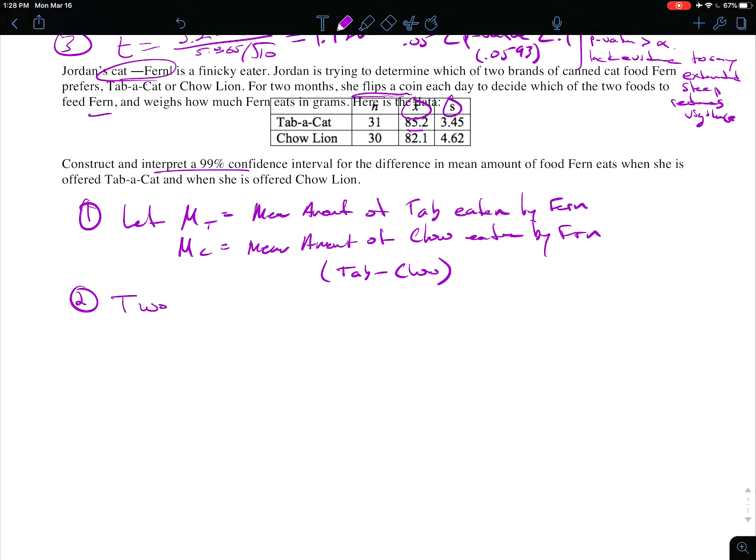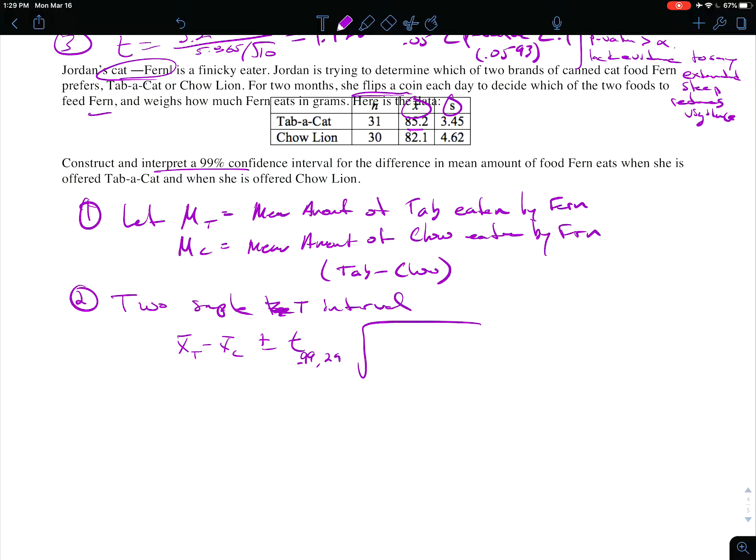So we're going to go with the two-sample t-interval at 99%, which is x-bar_T minus x-bar_C plus or minus the t for, we'll say this more conservative 29 degrees of freedom at 99% confidence. And then this is again where our mistakes get made: 3.45 squared over 31 plus 4.62 squared over 30, because the s is underneath the radical.